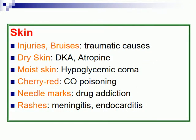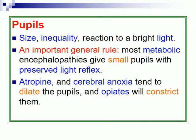Skin state: look for injury, bruises, dry skin, moist skin. In the case of hypoglycaemic coma the skin may be cherry red. Look also for rashes — in the case of meningitis — and assess the pupils.